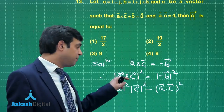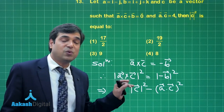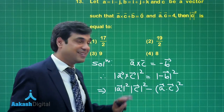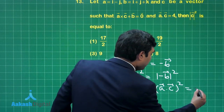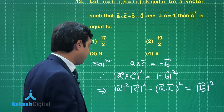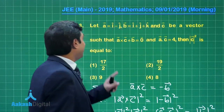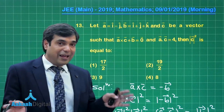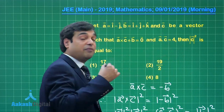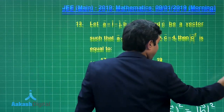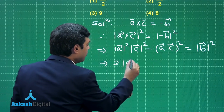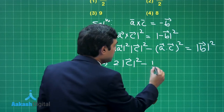This is because mod A squared mod C squared sine squared theta equals mod A squared mod C squared times (1 minus cos squared theta), giving us this result equal to mod B squared. Now, A is i minus j, so mod A is root 2, mod B is root 3, and mod C we have to find.